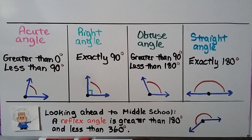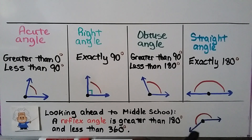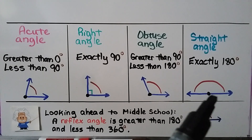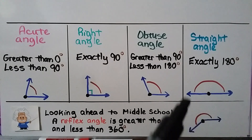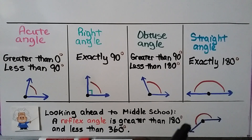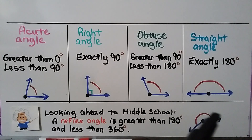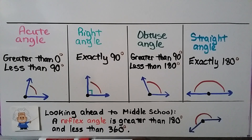When you get into middle school, you're going to learn about reflex angles. They're greater than 180 degrees — they open so much that they come around — and they're less than the 360 degrees of a circle.